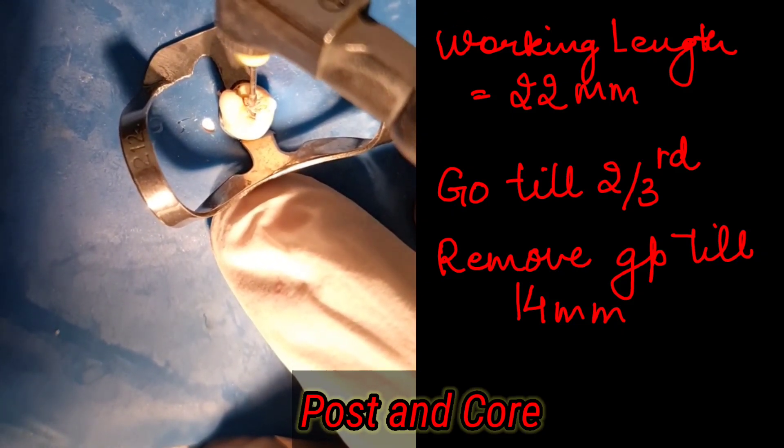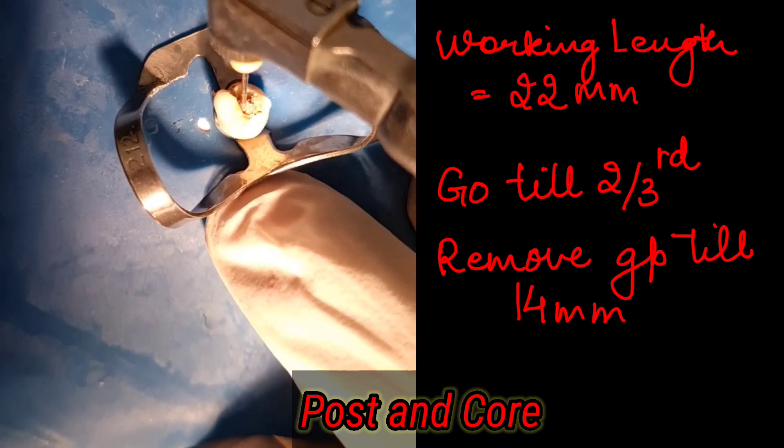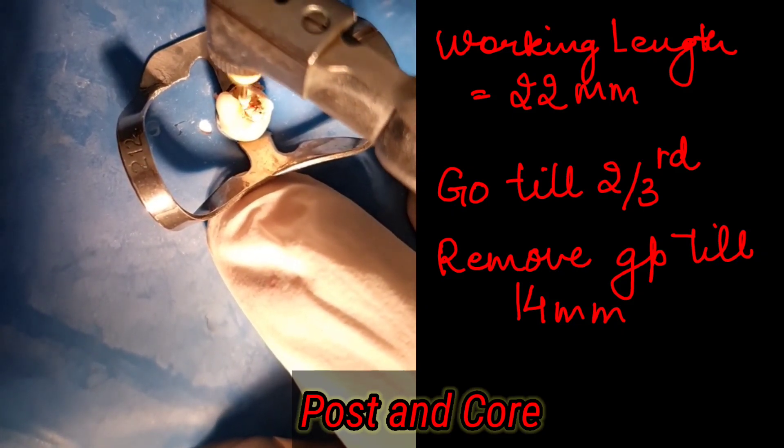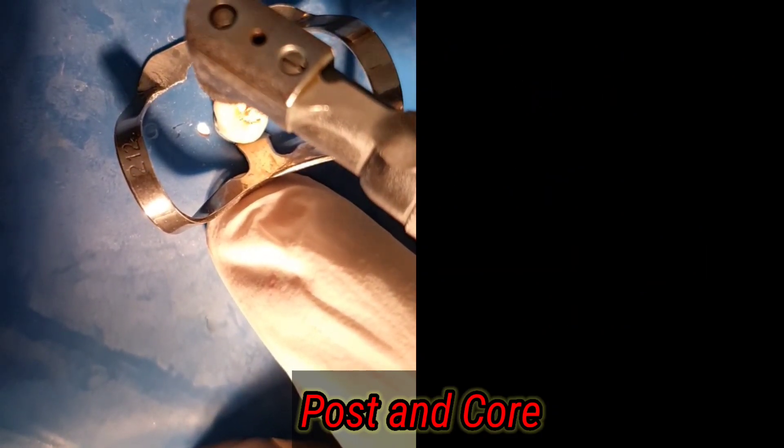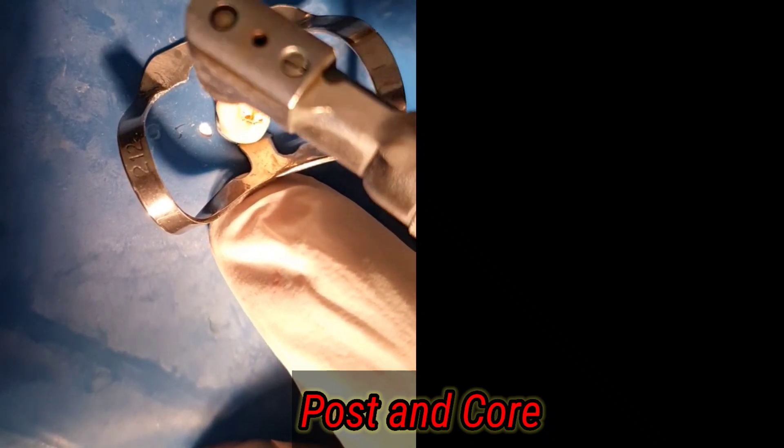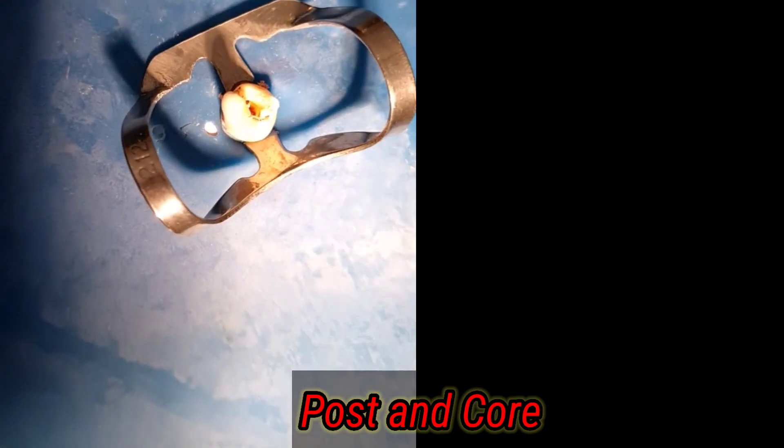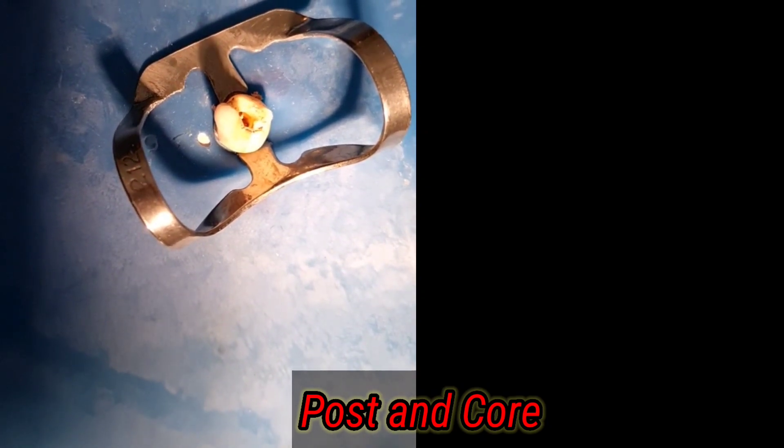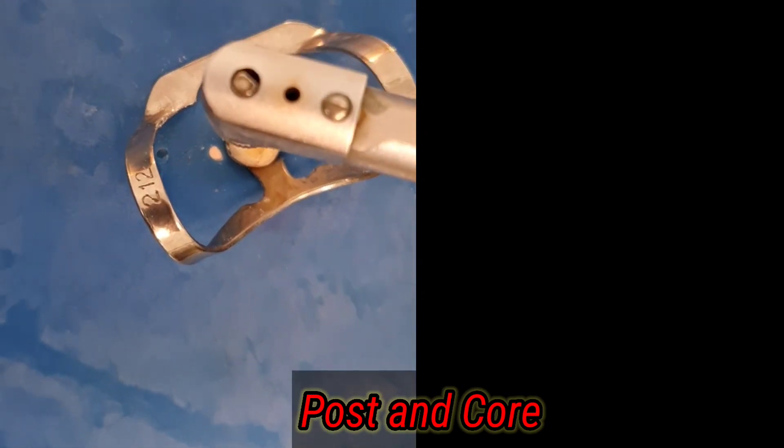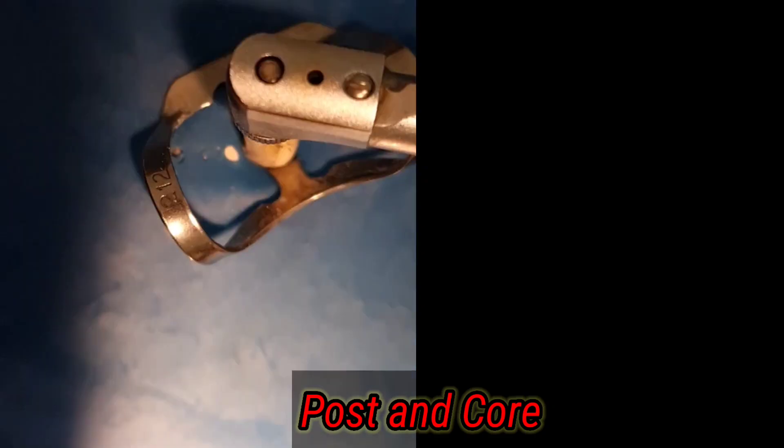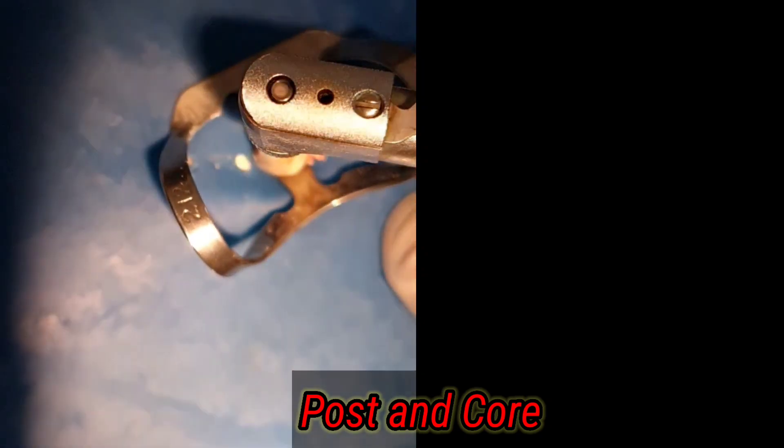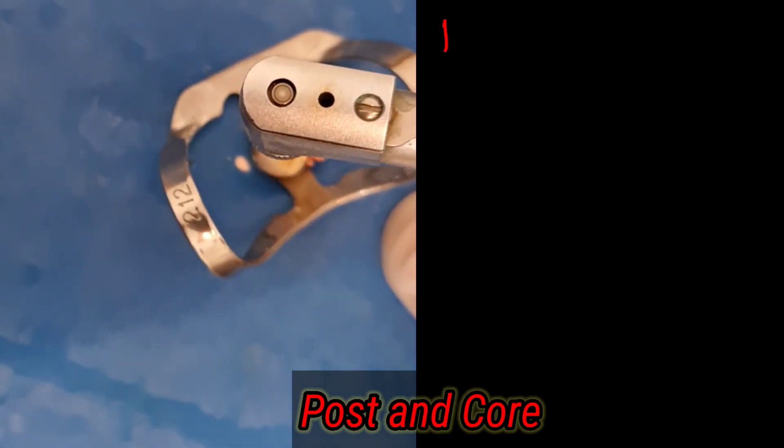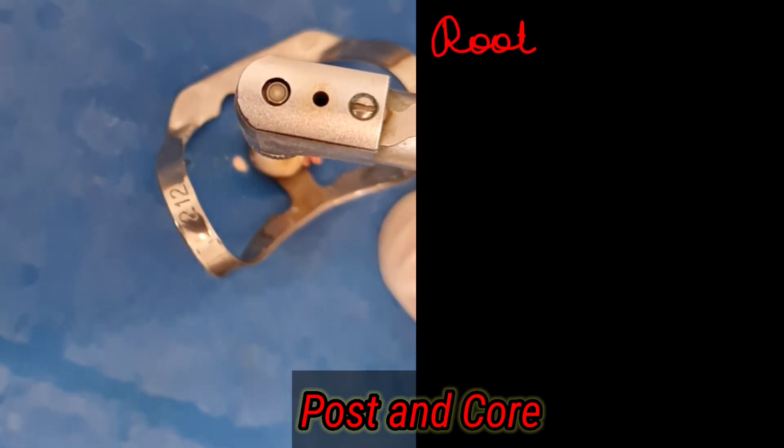Ensure that the post preparation diameter is smaller than one-third of the root diameter and then we start proceeding in the slow speed handpiece. Working length in this case is 22 millimeters and we are going up till 14 millimeters. Remember the rule to leave at least four to five millimeters of the gutta-percha as an apical barrier and also ensure the post preparation diameter should be smaller than one-third of the root diameter.